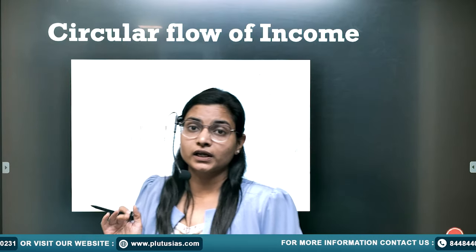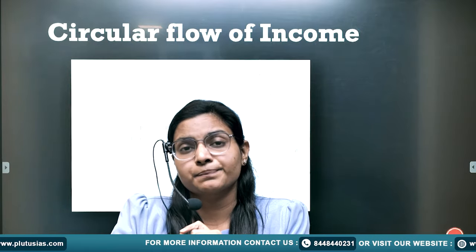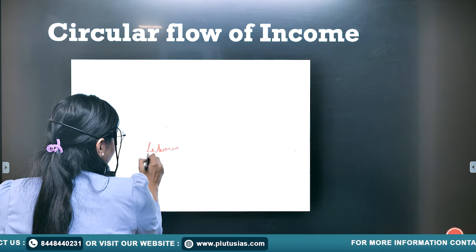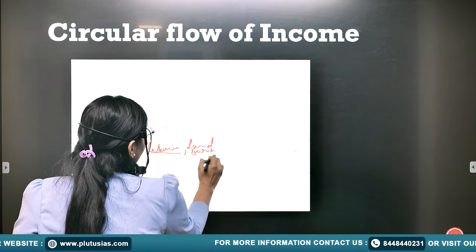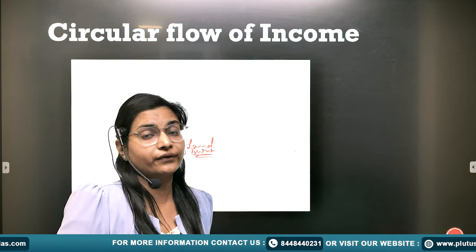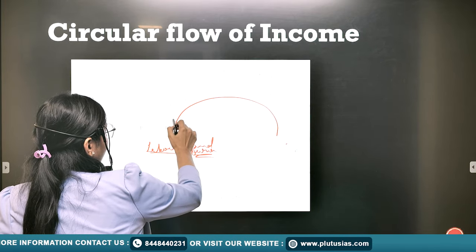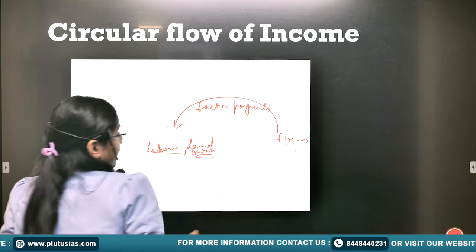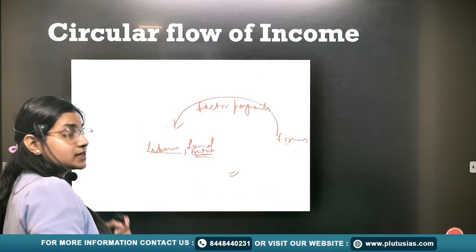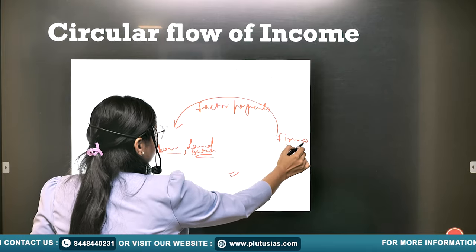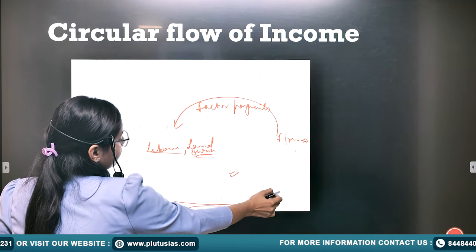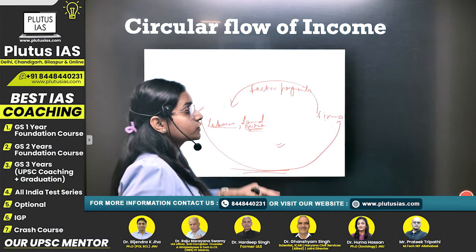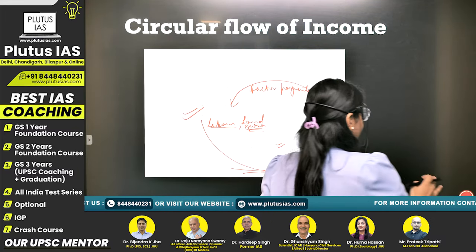Now comes the circular flow of income between two sectors only. The same factor payments need to be paid. Households — consider them as labor or maybe your landowners from whom you have taken the land on rent. These firms need to pay them factor payments. Households might be providing labor services, land services — different services are being provided by the households. Then the firms need to pay for the goods and services, and payment needs to be paid for goods and services by the households, because firms also provide goods and services.